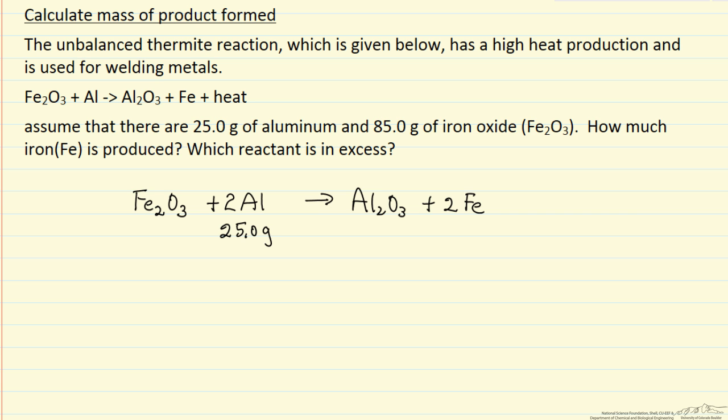We always want to write down what we know. We start with 25 grams of aluminum, 85 grams of iron oxide, and we want to know how many grams of iron are produced and which reactant is in excess.